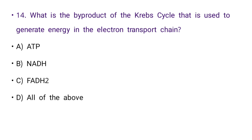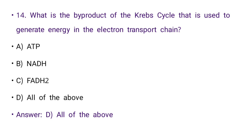Next: What is the byproduct of the Krebs cycle that is used to generate energy in the electron transport chain? Options: ATP, NADH, FADH2, or all of the above. The right answer is D: all of the above.